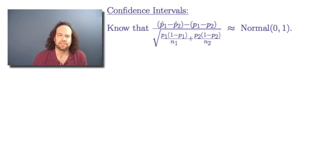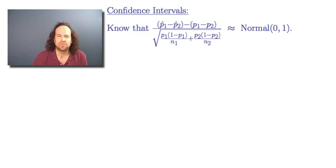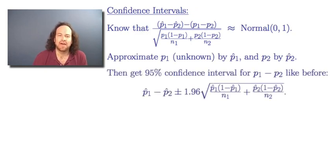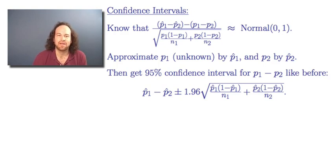For confidence intervals, we know this standardized fraction is approximately standard normal, but the variance involves the unknown quantities p1 and p2. We use our usual trick: approximate p1 by p1-hat and p2 by p2-hat. Then the 95% confidence interval for p1 minus p2 is given by p1-hat minus p2-hat, plus or minus 1.96 times the square root of p1-hat times (1 minus p1-hat) over n1, plus p2-hat times (1 minus p2-hat) over n2.